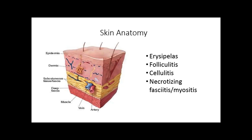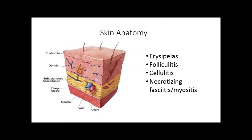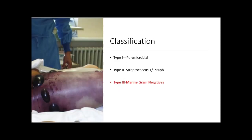First, skin anatomy. Some of you might feel it's not all that important, but it will help you remember certain things. You have the dermis and epidermis, and that's where you're going to see your cellulitis and erysipelas, which are sometimes hard to distinguish. Then you're going to have necrotizing fasciitis, which is going to affect your fascial layer and oftentimes the subcutaneous tissue or the muscle underneath it. You can also have gangrenous cellulitis, which needs to be treated as effectively as necrotizing fasciitis. Infections down here will track in a different way.